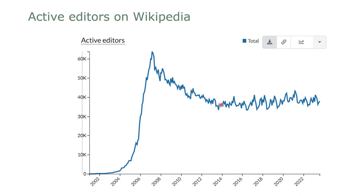By late 2014 we hit this minimum, and then the 2015 rally happened. Things stabilized and the number of active editors has oscillated for what is now more than a third of the life of the project, at around 40,000 or just below.